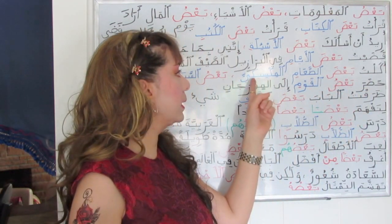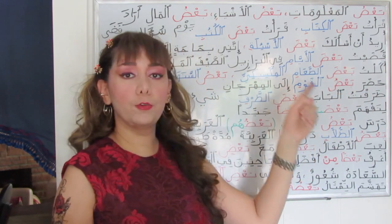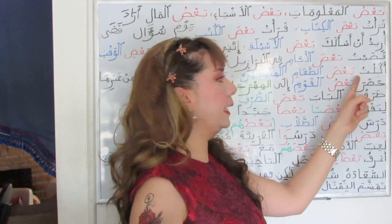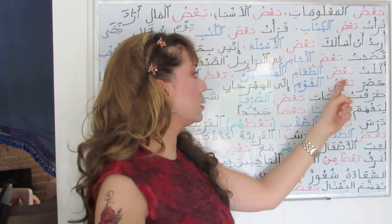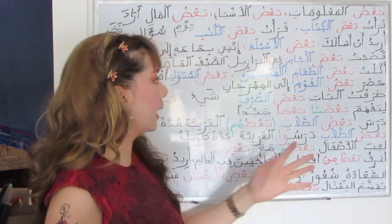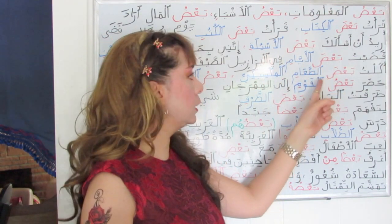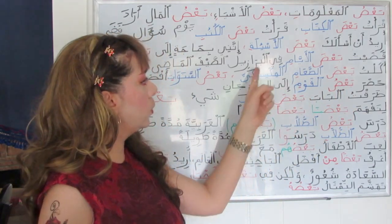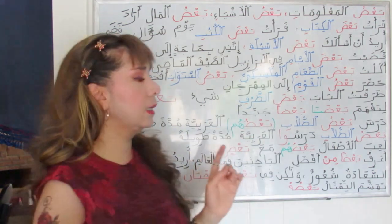Akaltu ba'da al-ta'am al-meksiki — I ate some Mexican food. I love Mexican food by the way. Akaltu — I ate — from the verb akala in the past tense. Ba'd here is the object of the verb akala: ba'da al-ta'am al-meksiki, some Mexican food.